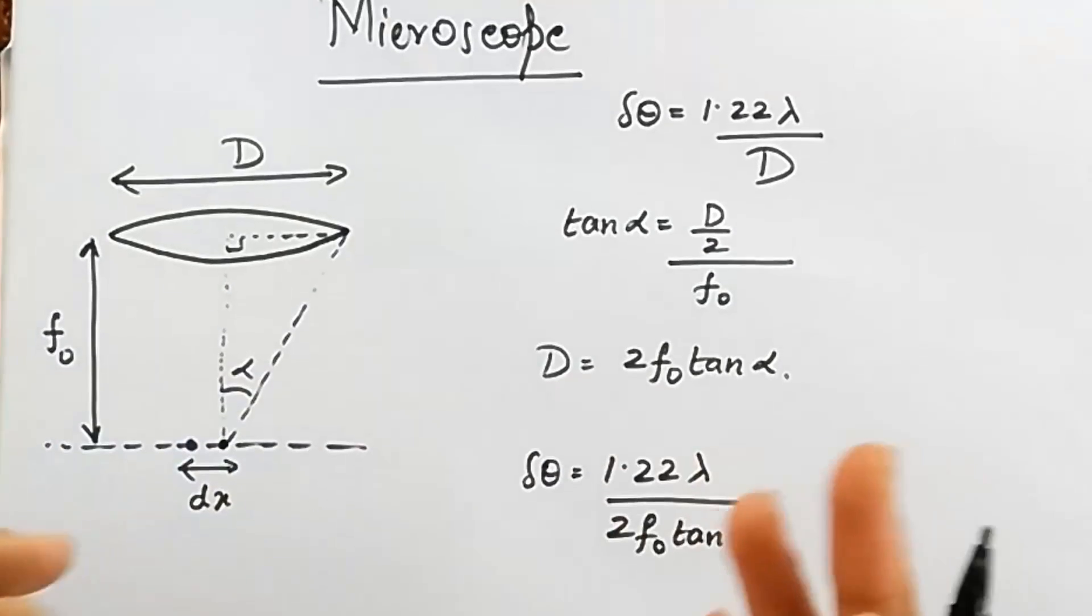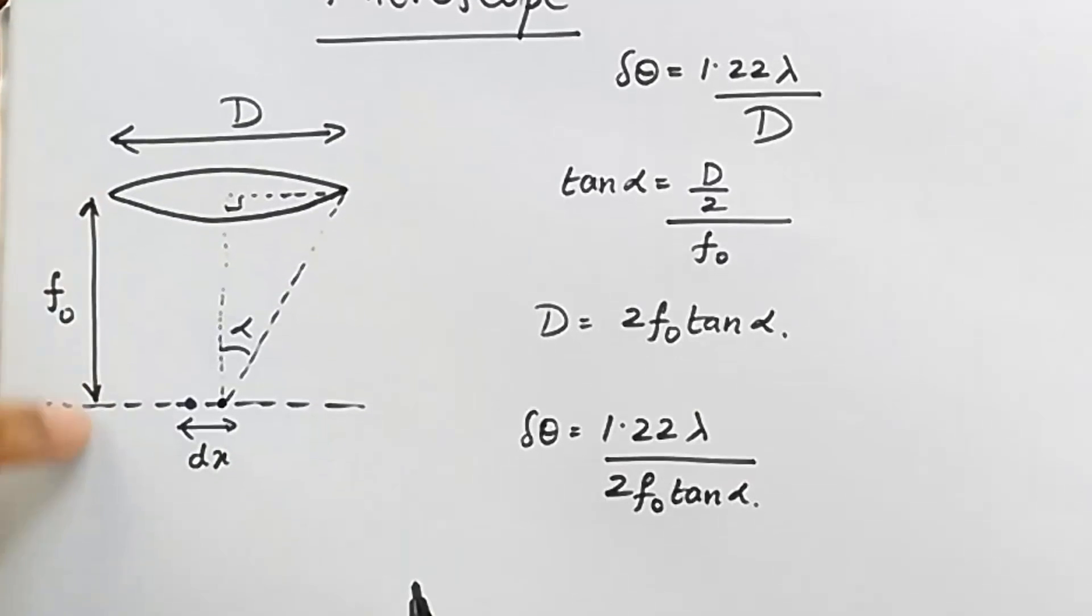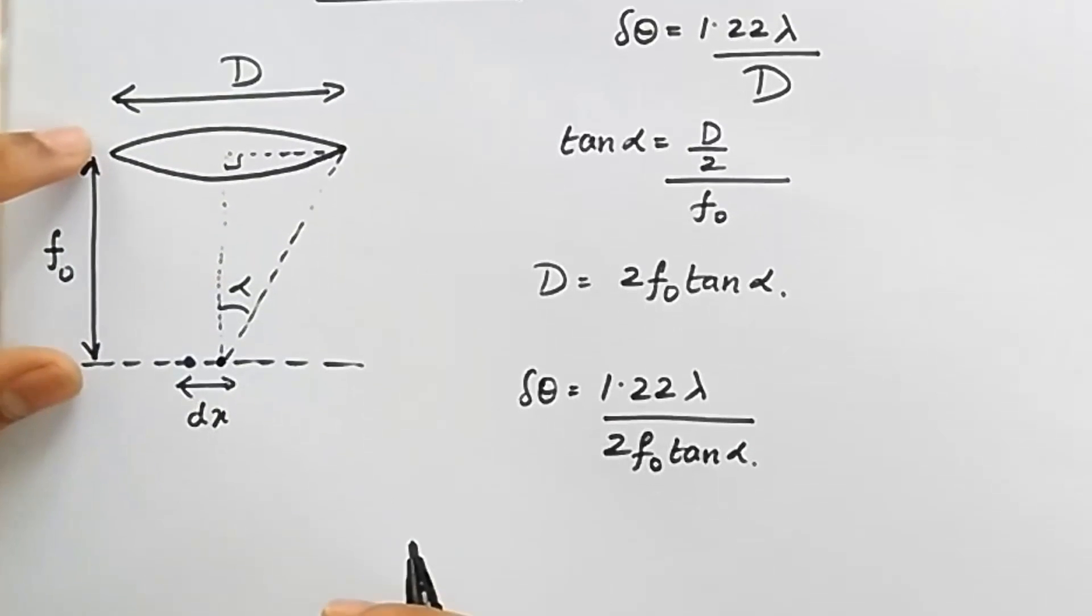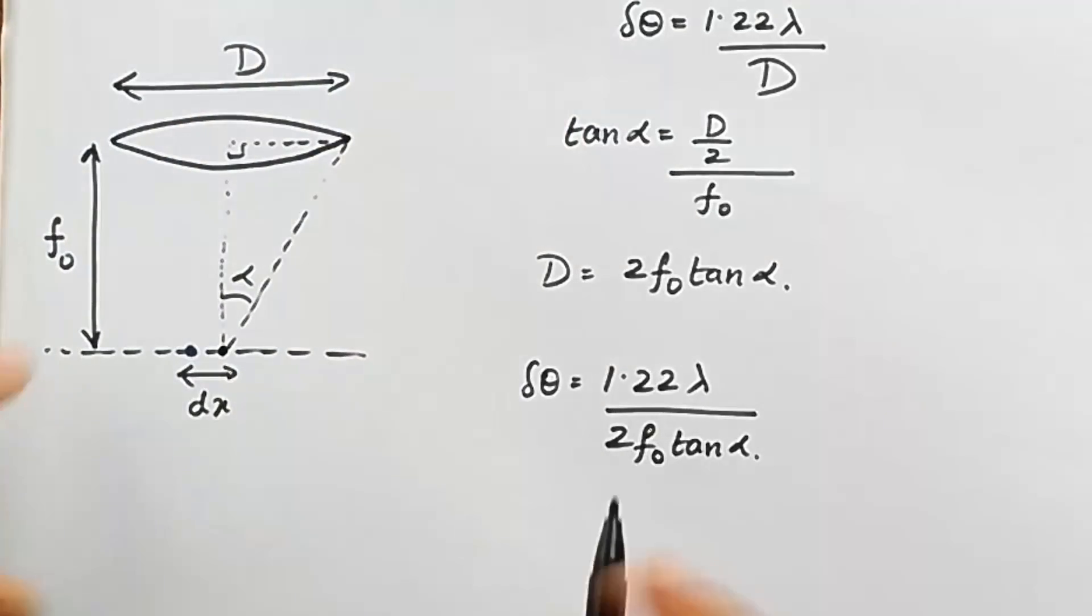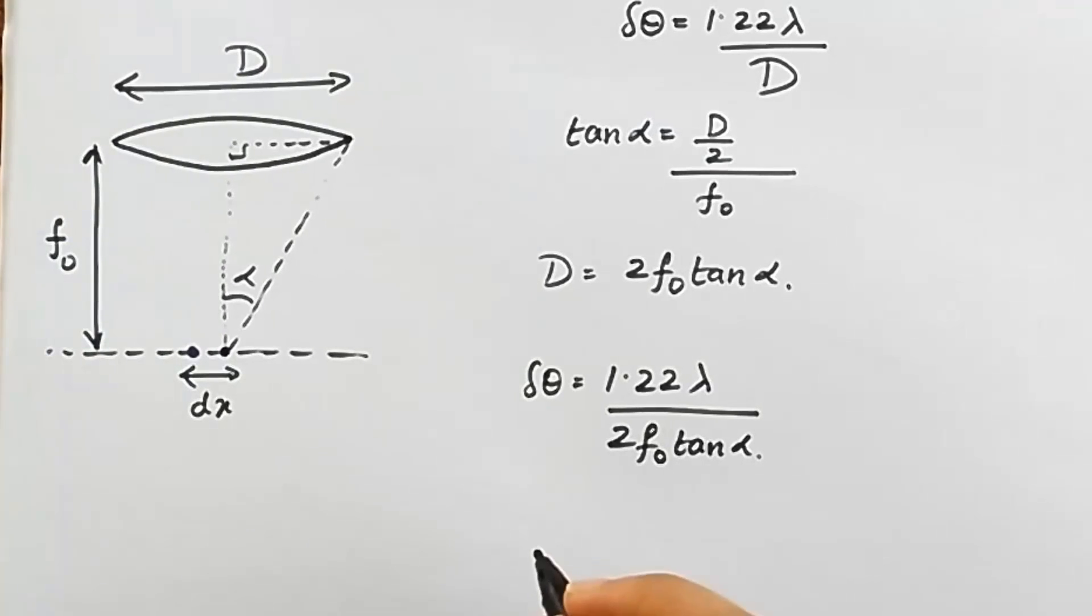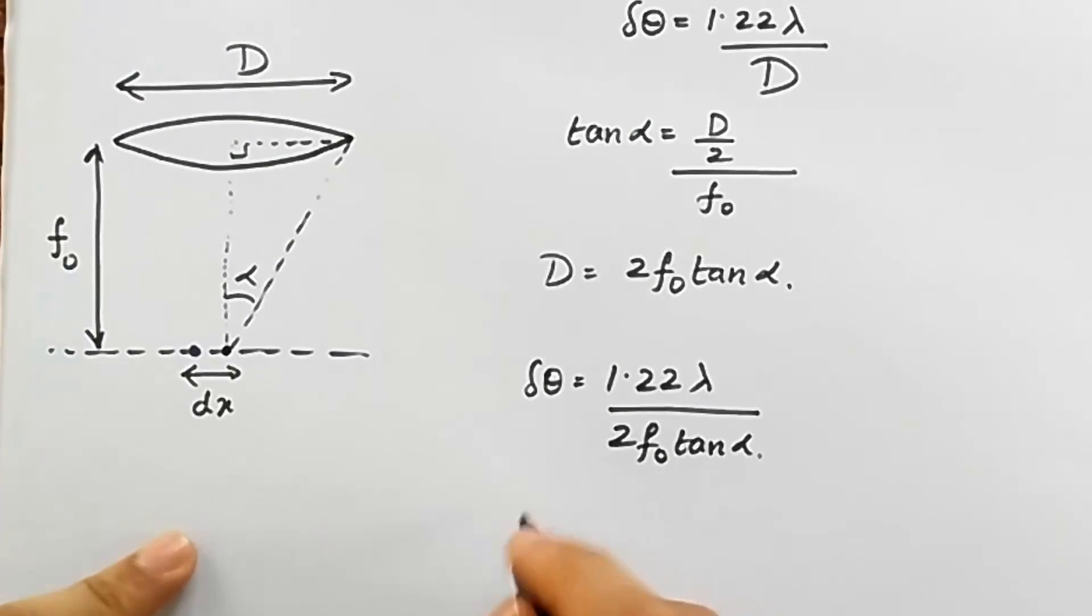And that's easy. How do we convert from angle to distance? We discussed that before. You just have to multiply it by this separation - how far the screen is. We did that before. Now instead of screen, it's this one. So all I have to do is put this over here.